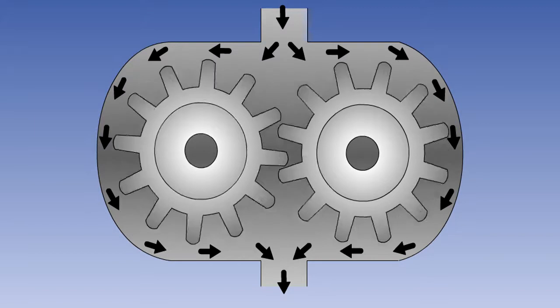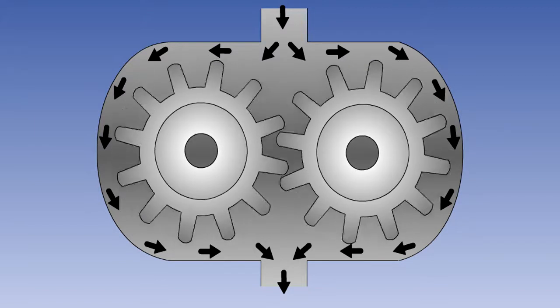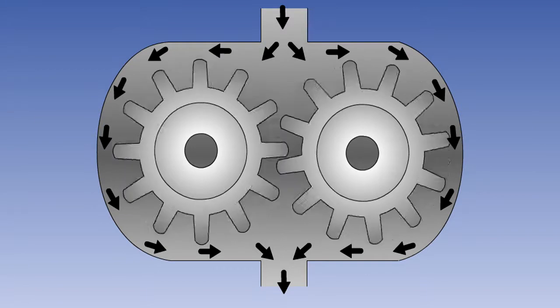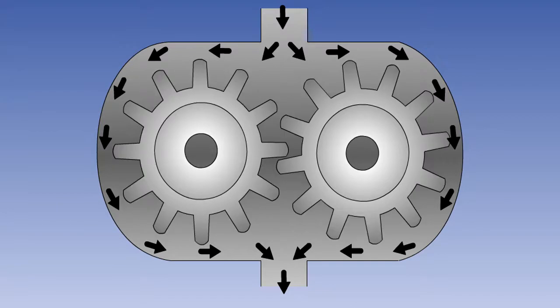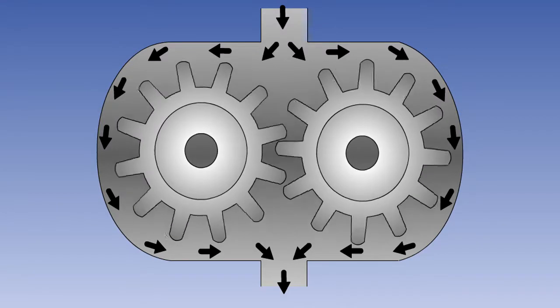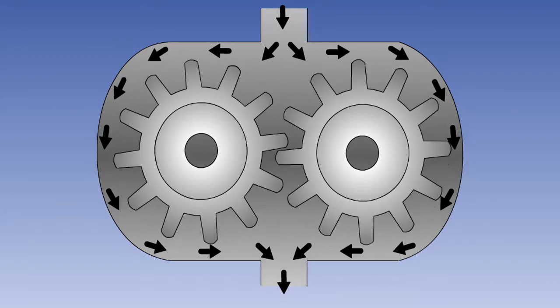As the two gears rotate, fluid is carried around in the spaces between the teeth from the inlet to the outlet side of the pump. This type of pump gives a relatively large flow rate, however its output pressure is relatively low. It is usually a single, as shown, or double stage pump.